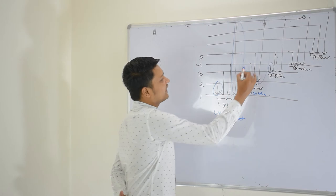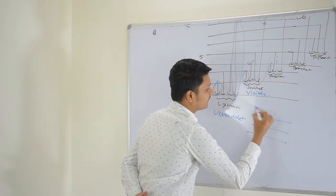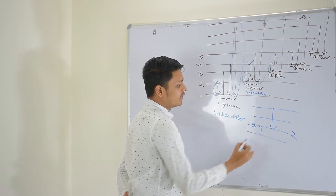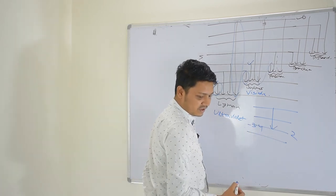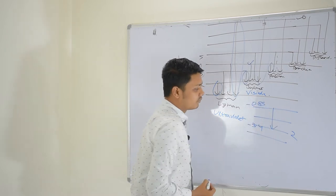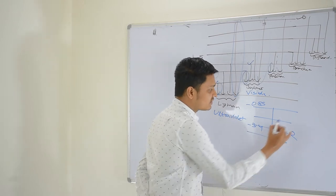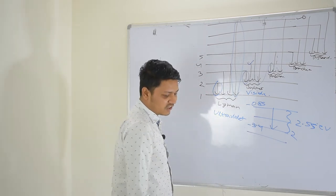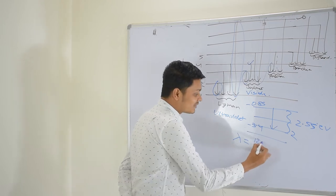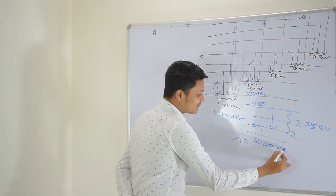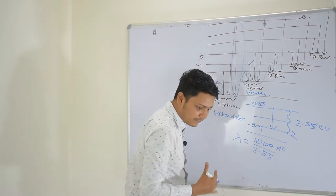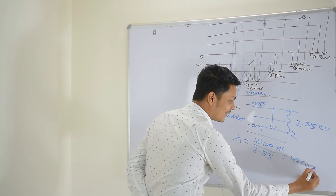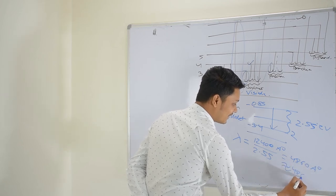What is the energy difference for the second line of Balmer series? For Balmer, the final state is N equals 2. The second line corresponds to the transition 4 to 2. Energy at N equals 4 is minus 0.85 eV, and energy at N equals 2 is minus 3.4 eV. The difference in energy is 2.55 eV. So the corresponding wavelength is hc divided by delta E: 12400 eV·Å divided by 2.55 eV. You will get 4860 Ångström, or equivalently 486 nanometers.